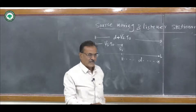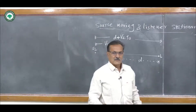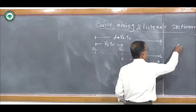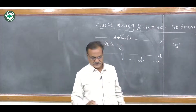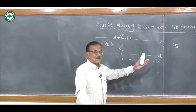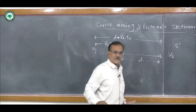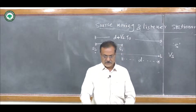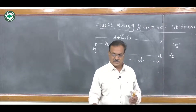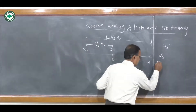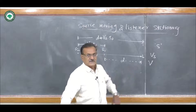This is the distance between the listener and source S2. Consider a source S2 moving and listener L is stationary. The source is moving with velocity Vs away from the listener. The speed of sound waves with respect to the medium is V. This direction is taken as positive.